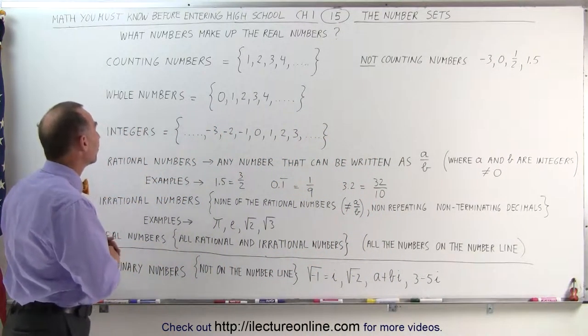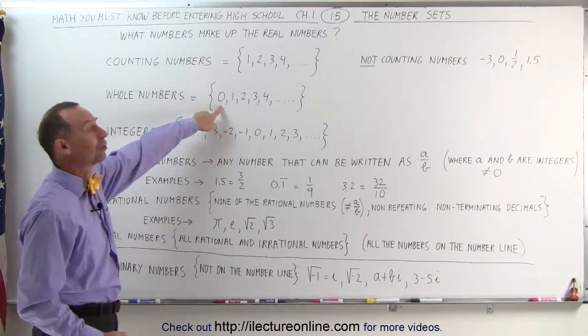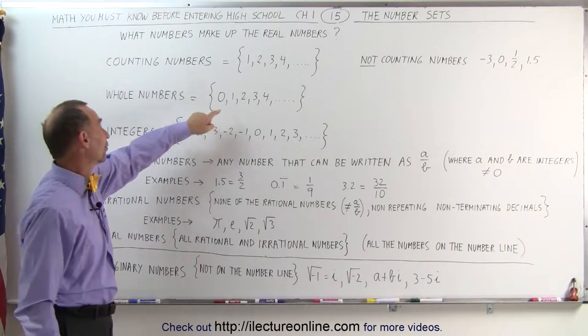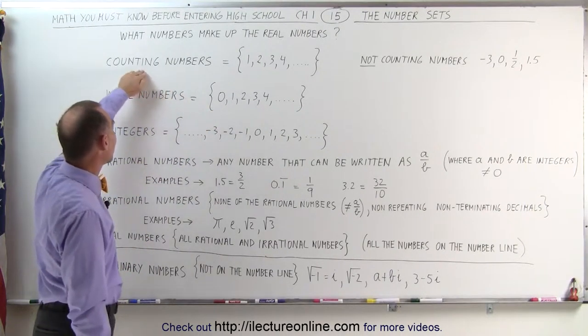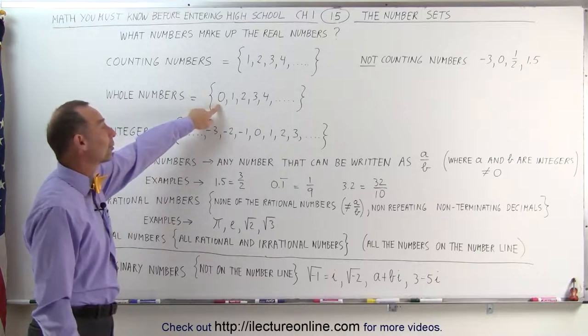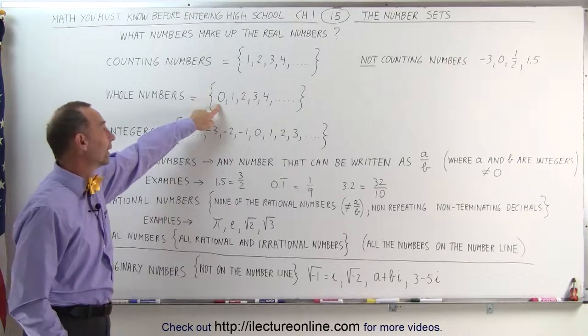Whole numbers are equal to all the counting numbers with one additional number: the number 0. So the only difference between the counting numbers and the whole numbers is that the whole numbers also include the number 0.